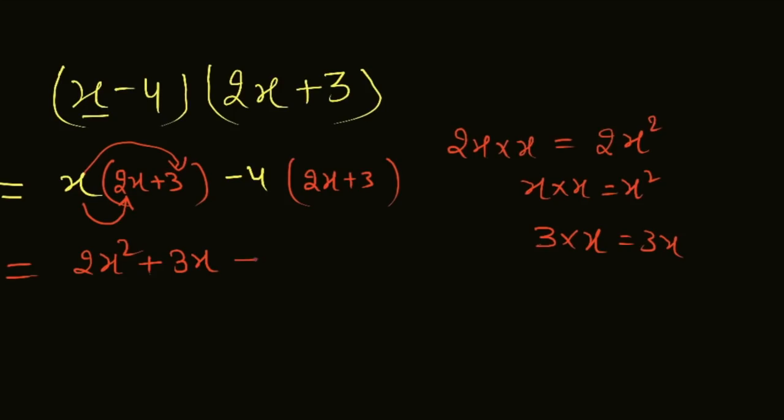And minus 4 into 2x is minus 8x. 4 times 2 is 8 and x remains the same, so minus 8x.